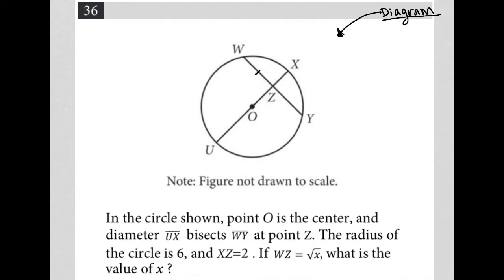So here, that means WZ, the length of WZ, or the distance between W and Z, is equal to the distance between Z and Y, right? So these are equidistant because it's being bisected.